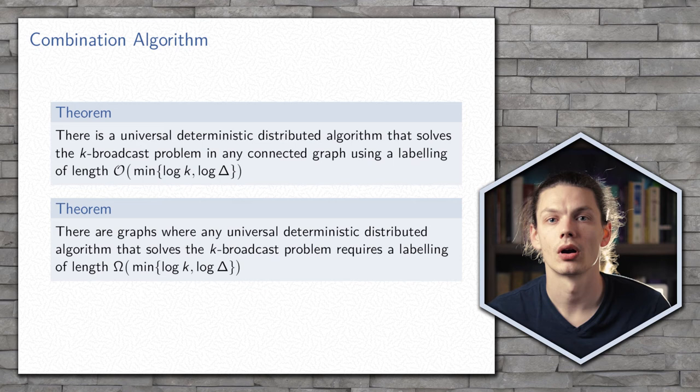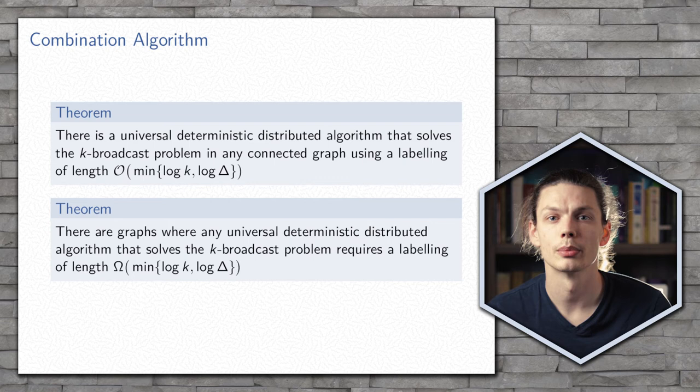And in fact, there are some graphs — the complete graph, for example — that require labelings of these lengths. A natural question to ask is: can we do better? Are there graphs where we can use even smaller labels?